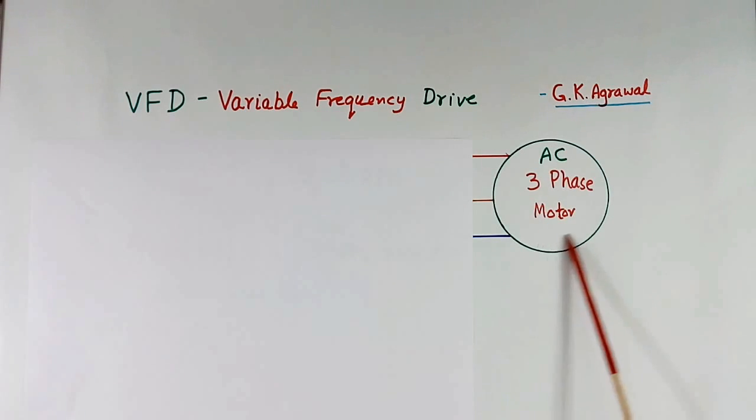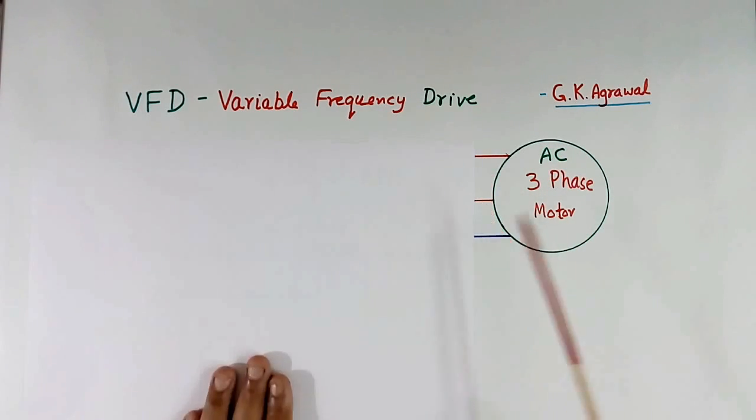Here we have one AC motor, a 3-phase motor with 3-phase supply. Generally it will be an induction motor. Speed of AC 3-phase motor depends upon the frequency of AC supply. So speed of motor can be controlled by changing the frequency of AC supply.